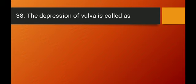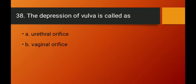Question number thirty-eight: the depression of the vulva is called what? The vulva is the external genitalia of females. The depression of the vulva is called the vestibule. The vestibule has two openings: the urethral meatus (opening of urethra) and the vaginal orifice (opening of vagina). Option D — vestibule — is the right answer.